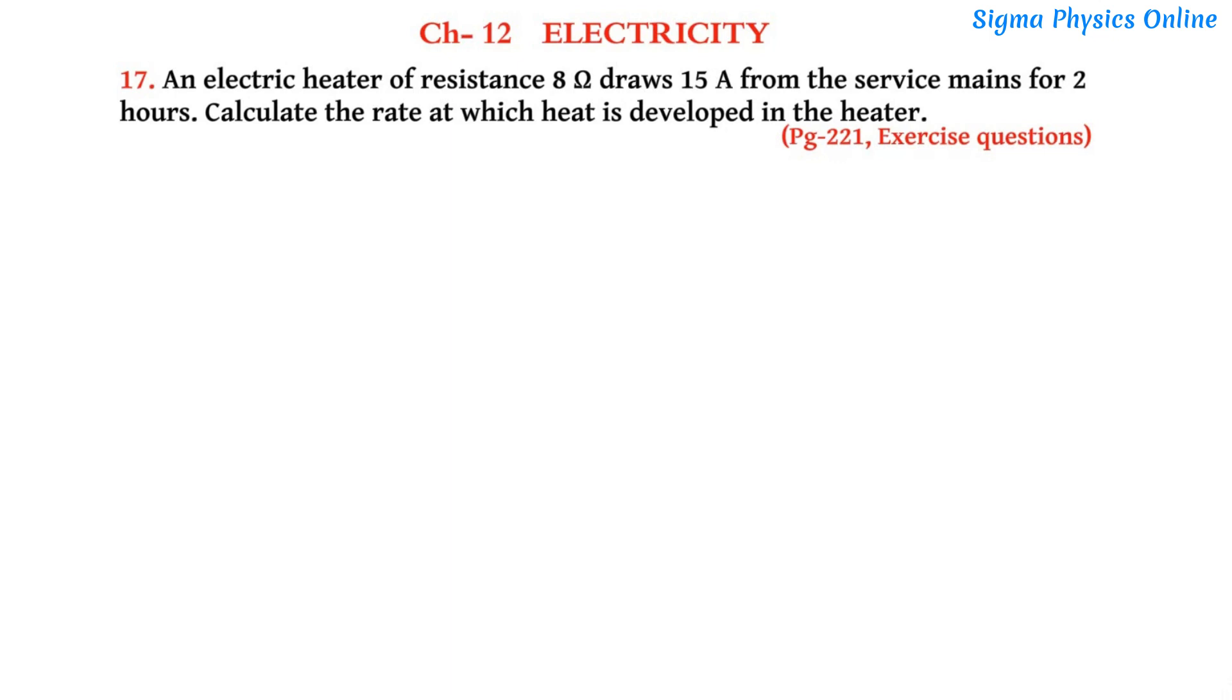To understand this question, let's first draw the circuit diagram. Here we have an electric heater whose resistance value is given as 8 ohm, and this resistor draws a current of 15 ampere from the service mains.